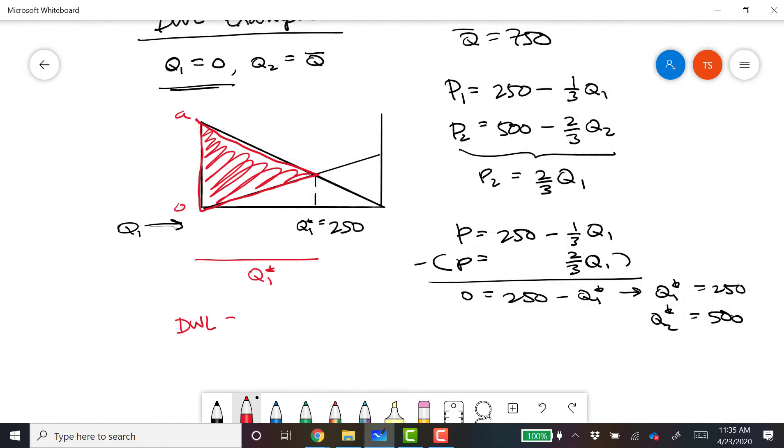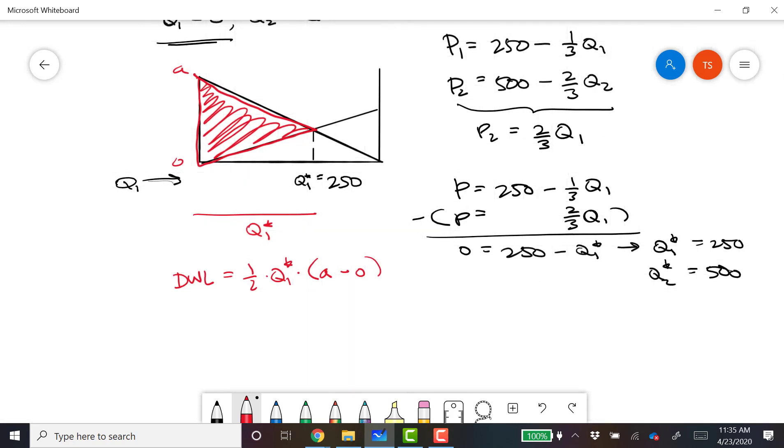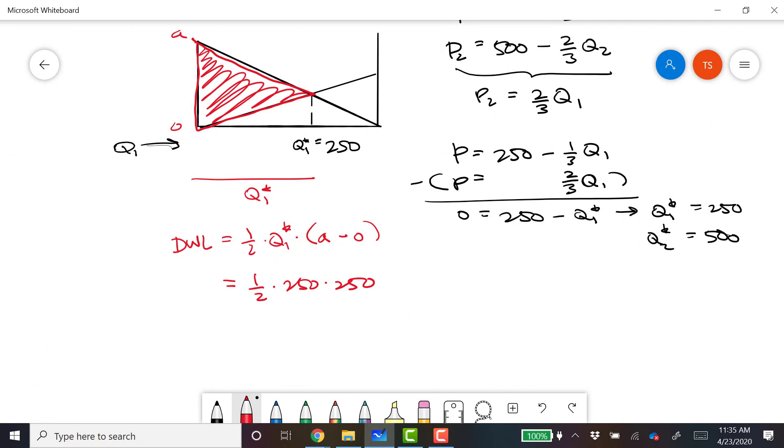So in this case, the deadweight loss is much simpler. It's equal to one-half times Q1 star times A minus zero, which equals A. A being the choke price for the person who was excluded. In this case, party number one. So this is one-half times 250, and A is also 250. So 250 squared is 62,500 times a half. So this equals $31,250. So that's the simpler way to deal with deadweight loss in cases where you have an initial allocation that's all or nothing.